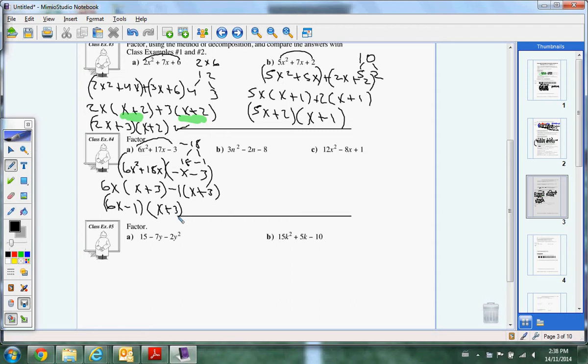Part B. Negative 24. I want to break that into negative 6, positive 4. So, that's going to give me 3n squared minus 6n plus 4n minus 8. Group. I'm going to pull a 3n out. Gives me n minus 2. I'm going to pull a 4 out. Gives me n minus 2. And I'm done.